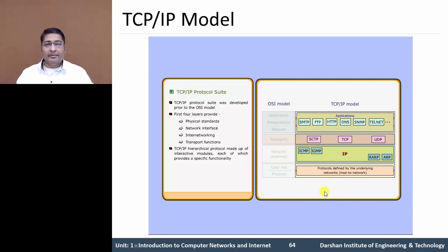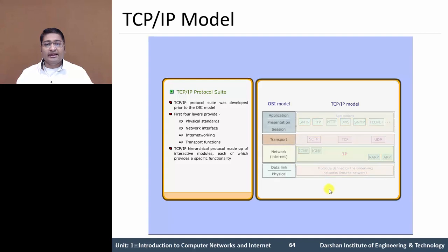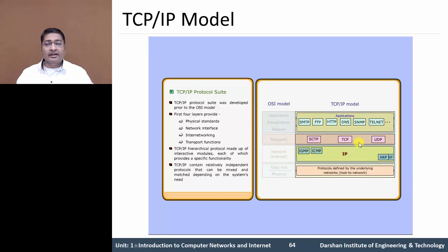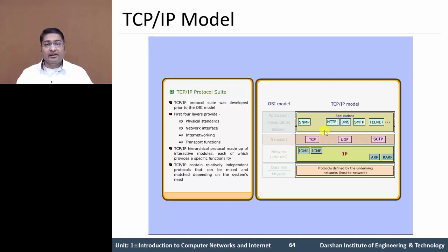We can say that the TCP/IP Hierarchical Model has Independent Functionality. Rather than the OSI model where each layer's functionality depends on the others, TCP/IP contains relatively independent protocols that can be mixed and matched depending on the system requirements.